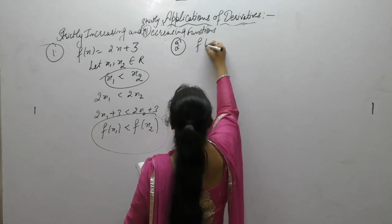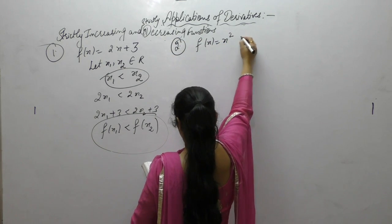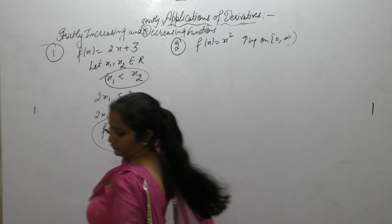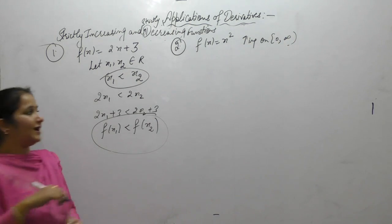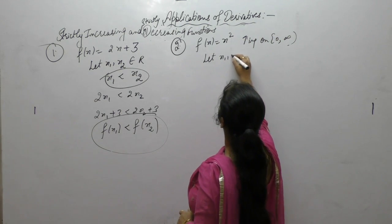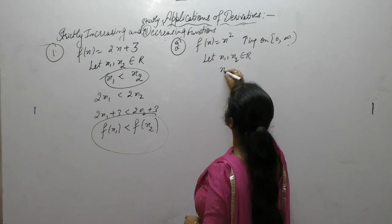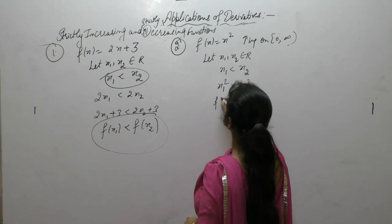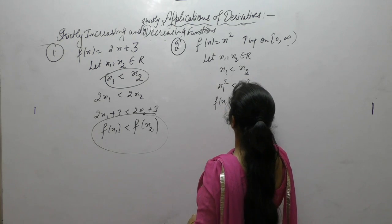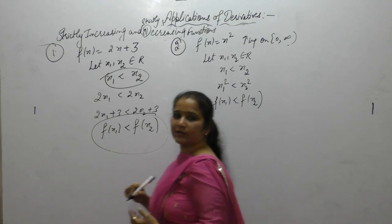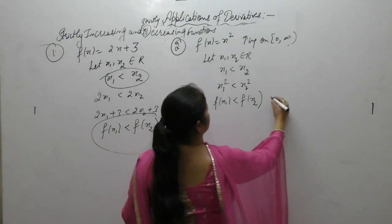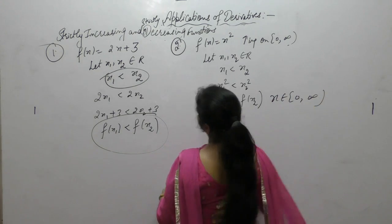Show that f(x) = x² is strictly increasing on (0, ∞). Let x₁, x₂ belong to ℝ. If x₁ < x₂, we square both sides, giving x₁² < x₂², which means f(x₁) < f(x₂). Therefore the function f(x) = x² is strictly increasing for x belonging to (0, ∞).